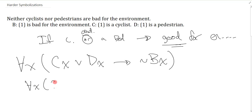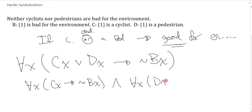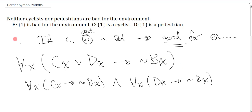Some people might have just split this into a statement about cyclists and then a separate statement about pedestrians — that's perfectly acceptable. But I always find it easier, if they both have the same property, to just use the 'or' in the group to combine them and have a shorter statement to symbolize. It doesn't really matter either way. So this is a tricky one unless you paraphrase it — once you paraphrase it, it's very straightforward to symbolize.